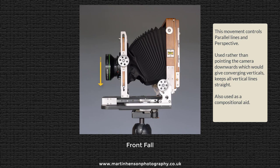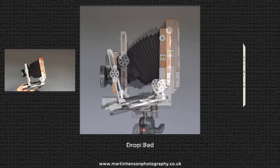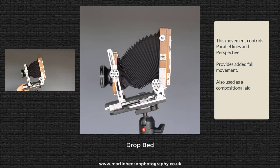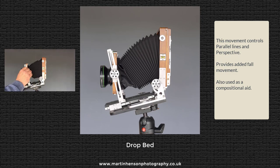For increased control of perspective and parallel lines, we can use drop bed. Here the bed of the camera is inclined downwards, while the front and rear standards remain straight. The lens is then dropped down as far as possible, giving you increased fall on the lens — more than front fall alone would provide.